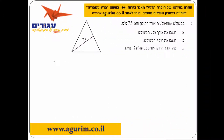במשולש שפי הצלעות, אורך התיכון הוא 7.5 סמטר, אנחנו צריכים לחשב את אורך צלע משולש. במשולש שכל הצלעות שוות, אנחנו יודעים שכל הזוויות הן בנות 60 מעלות.